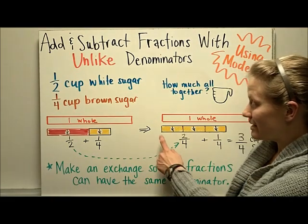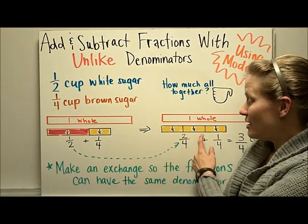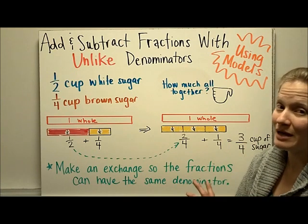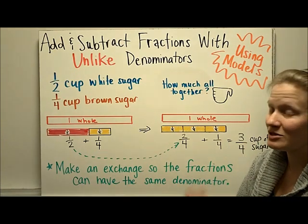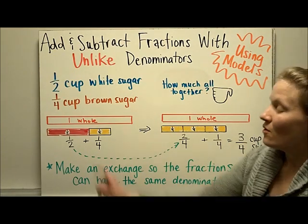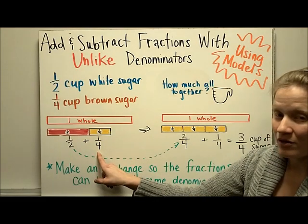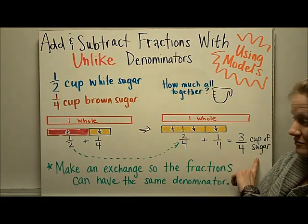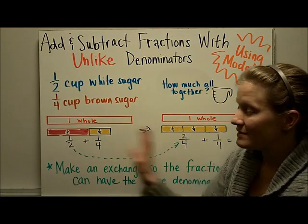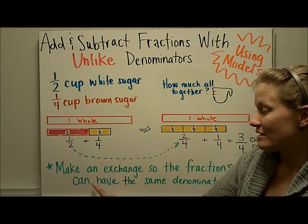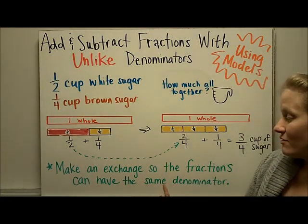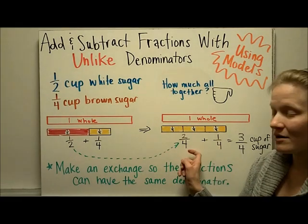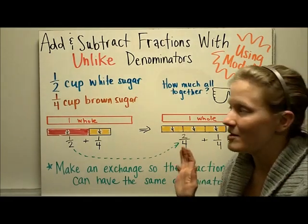So we've made an exchange and now we can easily add two-fourths plus one-fourth to get three-fourths, remembering that we don't add denominators, we just add numerators. So one-half plus one-fourth cup of sugar is three-fourths cups of sugar. In this example we see that you make an exchange so that the fractions can have the same denominator — here they both have four as their denominator.